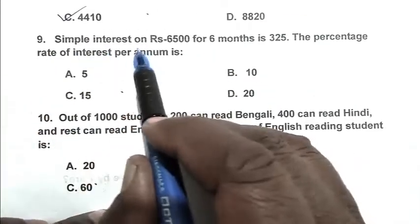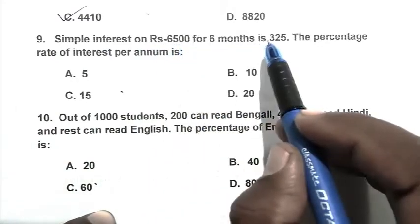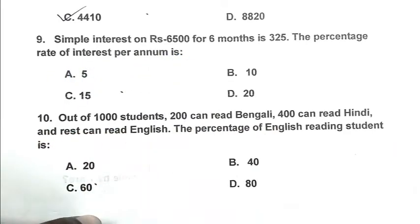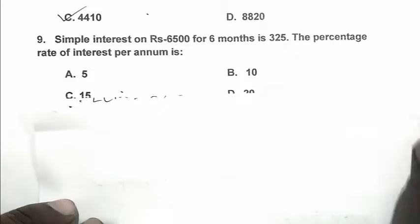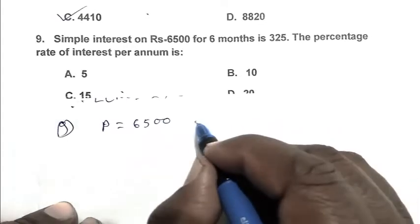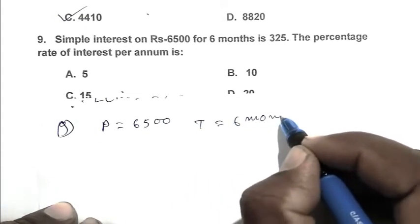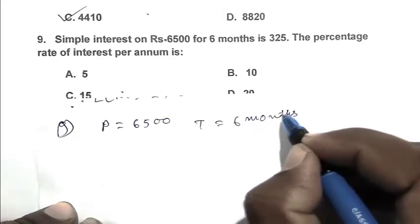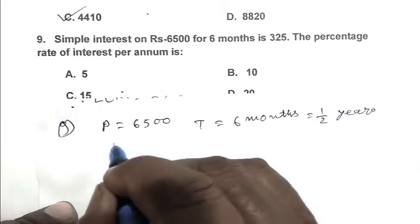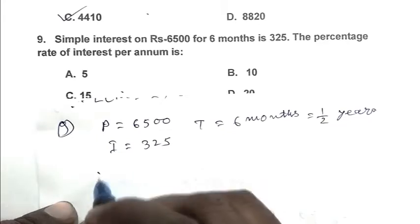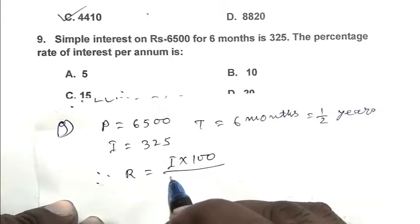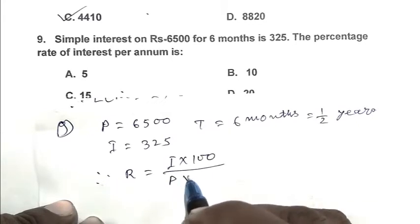Question number 9, simple interest on rupees 6,500 for 6 months is 325. The percentage rate of interest per annum is. We calculate it from the formula. Principle is 6,500, time is 6 months, that is 1 by 2 year, interest is 325.